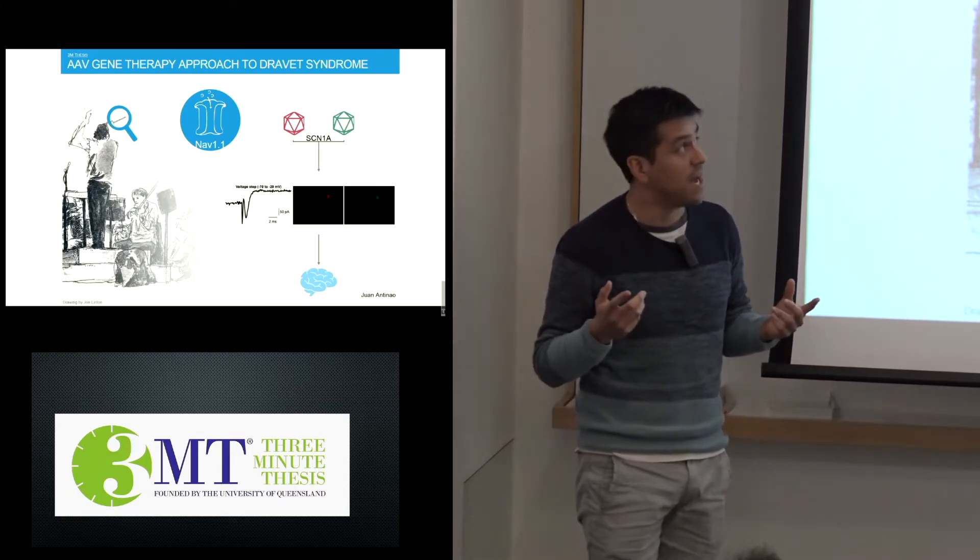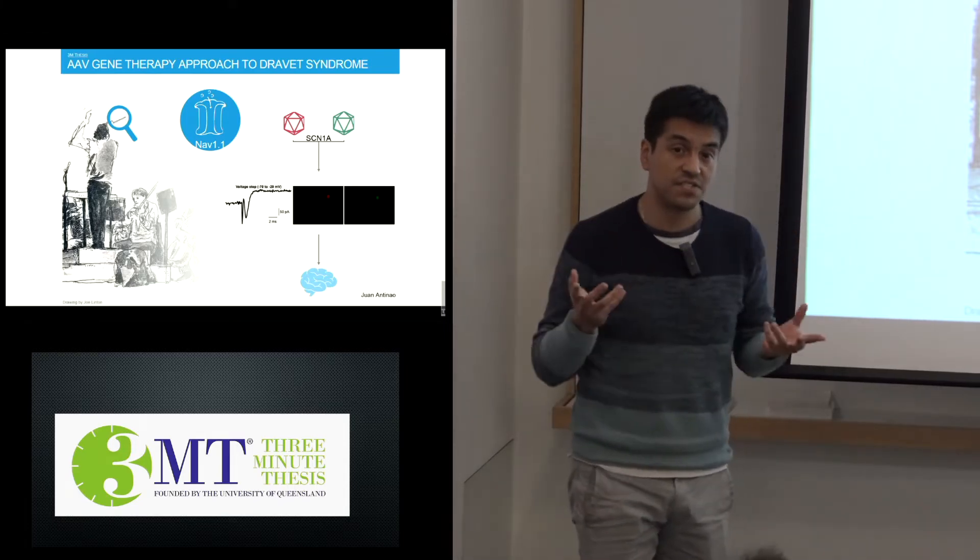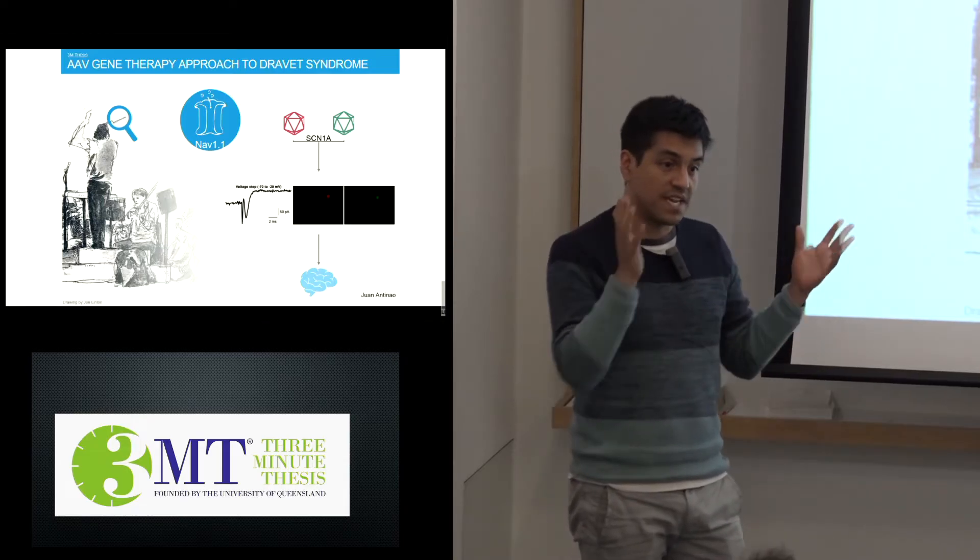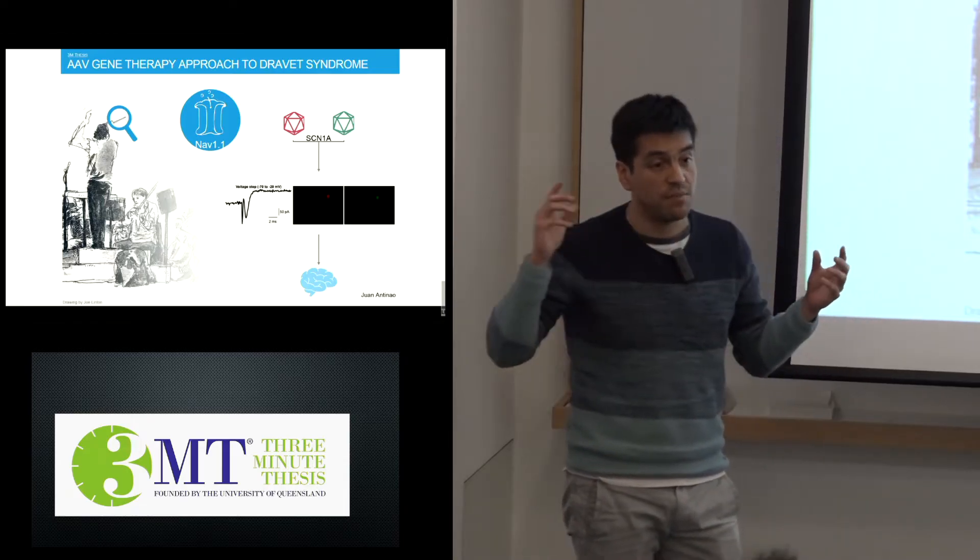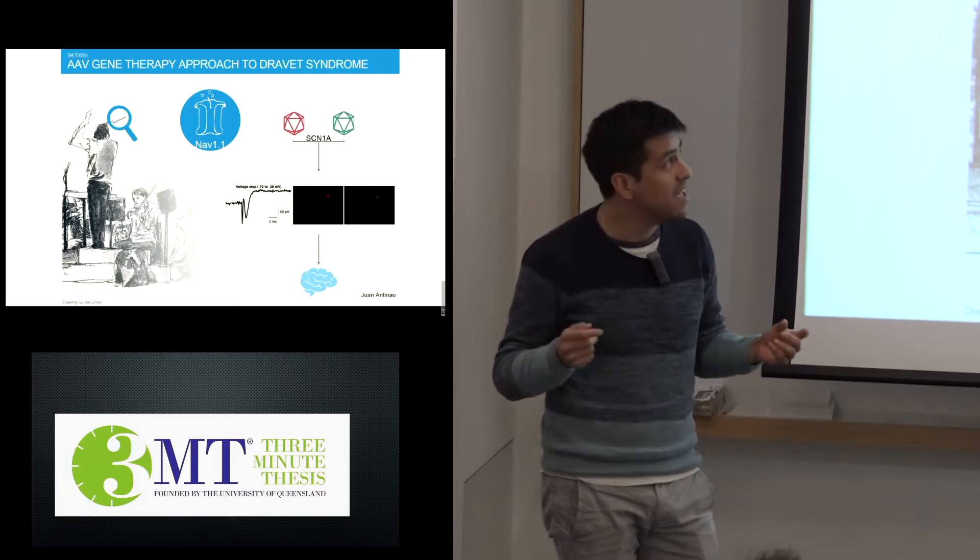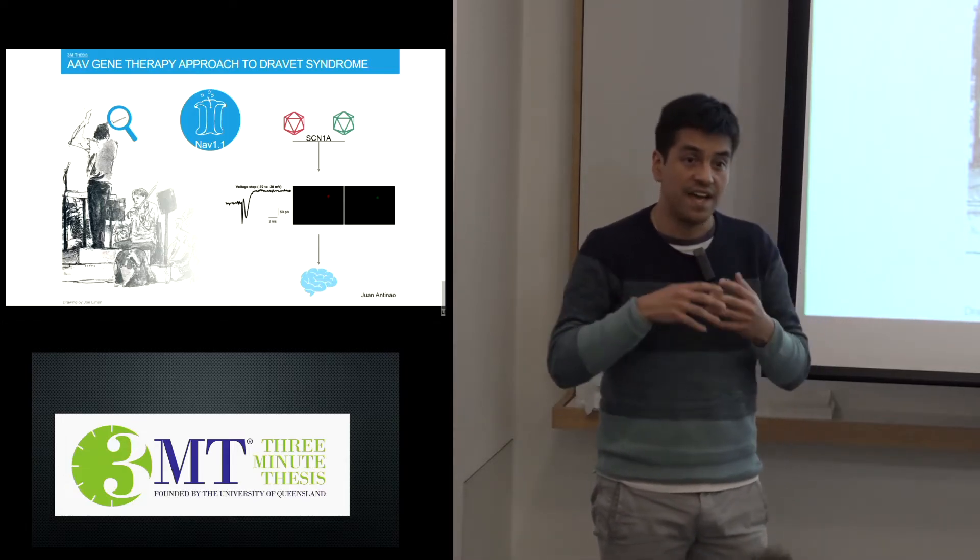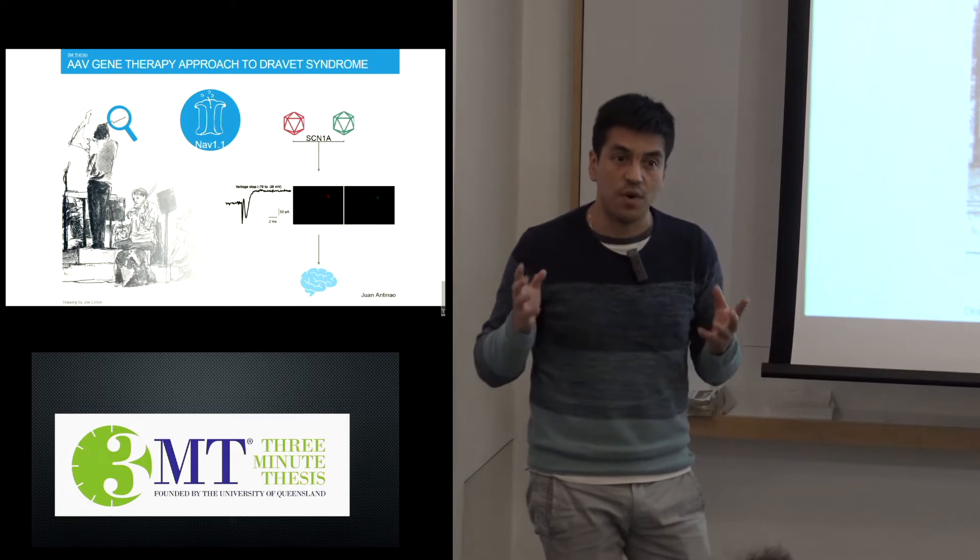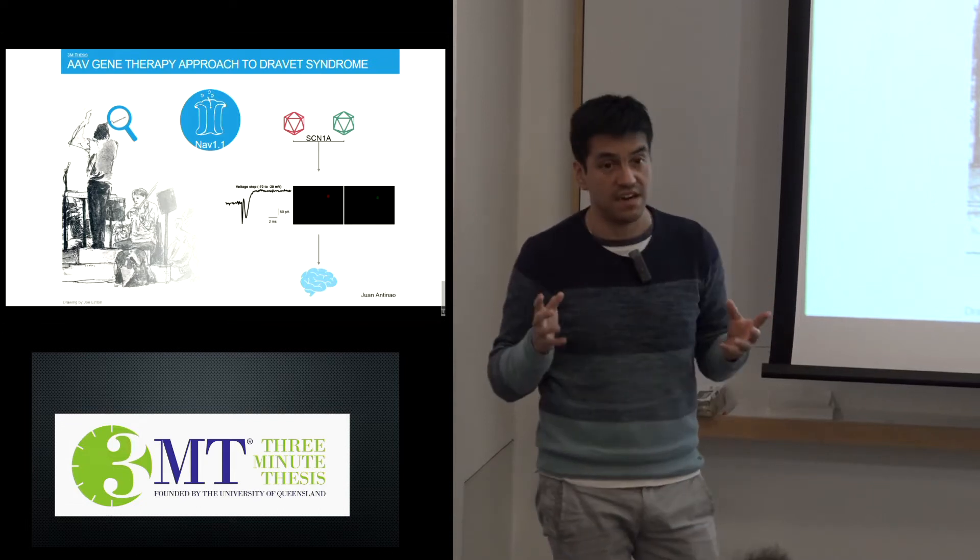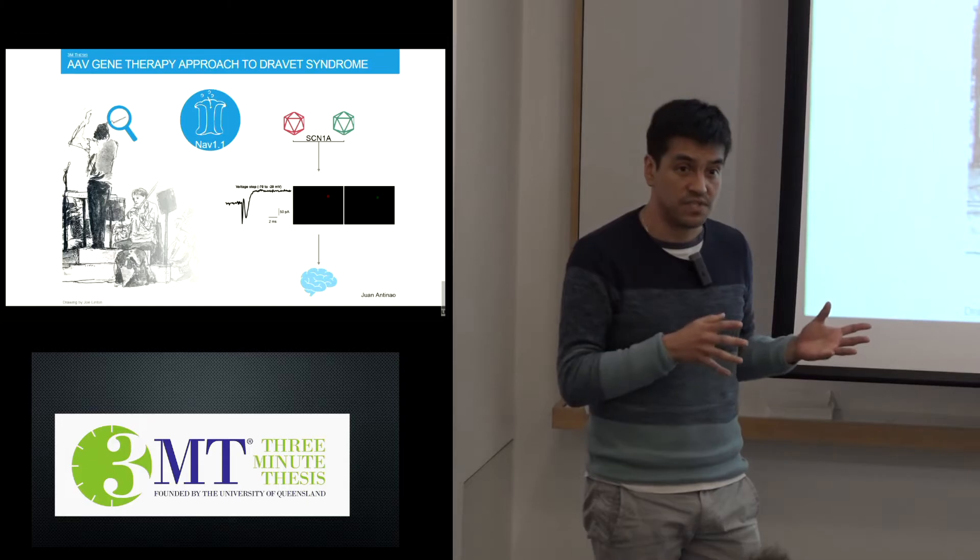Our brain works in a similar manner. We could roughly describe our brain as composed by excitatory neurons, which process information coming from our surroundings, but not all of these neurons can act at the same time. The inhibitory neurons in our brain are the ones that are in charge of coordinating their actions to produce appropriate responses.